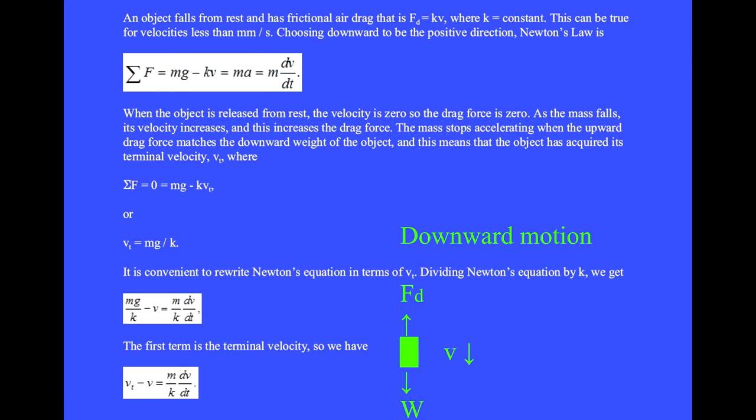It is convenient to rewrite Newton's equation in terms of the terminal velocity. Dividing Newton's equation by k, we get mg over k minus v equals m over k dv dt. The first term is the terminal velocity. So we have vt minus v equals m over k dv dt.